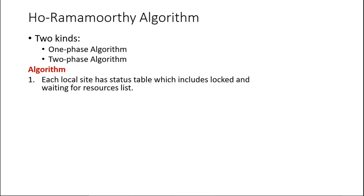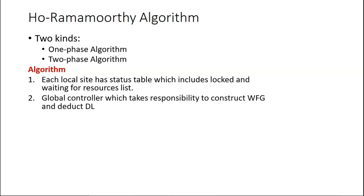The status table includes the locked resources and those which are being waited for. There will always be a global controller which takes responsibility to construct the wait-for graph and to detect deadlock. One among the sites will be nominated as the global controller site, whose responsibility is to construct the wait-for graph and to detect the deadlock. The global controller will request the status table maintained by every individual site.